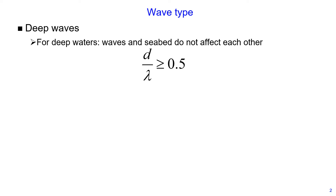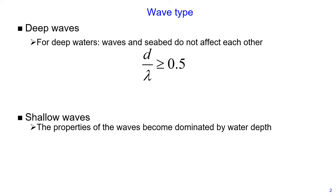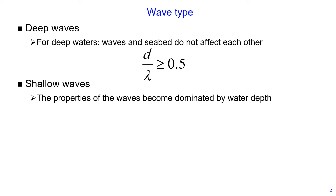Another type of waves is shallow waves. The properties of the waves become dominated by water depth, and these waves are defined when the ratio of water depth divided by wavelength is less than or equal to 0.05.